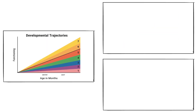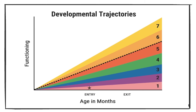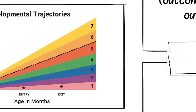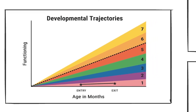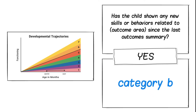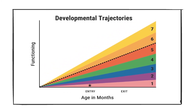A small percentage of children show very little or even no growth while in the program. For these children, the answer to the progress question — whether the child acquired any new skills between entry and exit — is important. If a child has a rating of 1 at both entry and exit but the answer to the progress question is yes, the child's trajectory is going up ever so slightly — another example of category B. If the answer is no, the child falls into category A, meaning the developmental trajectory was flat or went down, indicating the child lost skills in the outcome area.